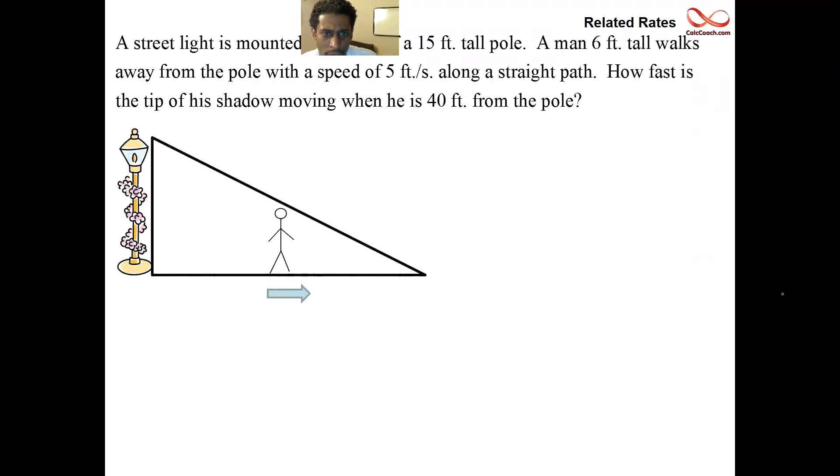What happens is it creates a triangle. My hypotenuse is the beam of light. The person is walking away from the base of the lamp pole. The question then asked about the tip of the shadow. And so there's a shadow that's cast by the beam of light. And we want to know how fast is the tip of the shadow moving at a particular instant when a person is 40 feet from the pole.